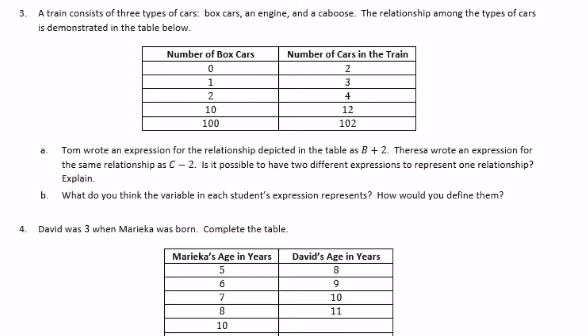Number three: a train consists of three types of cars — boxcars, an engine, and a caboose. The table shows: zero boxcars means two total cars; one boxcar means three cars; two boxcars means four; ten boxcars means twelve; one hundred boxcars means one hundred two. Tom wrote the expression b plus two and Teresa wrote c minus two for the same relationship. Is it possible to have two different expressions? Short answer: yes.